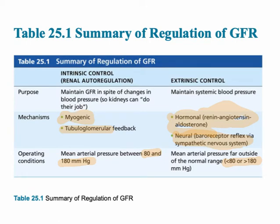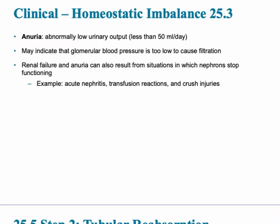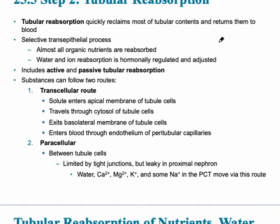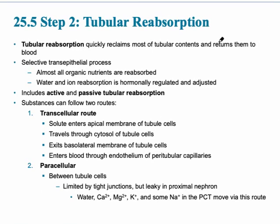A homeostatic imbalance called anuria is the abnormally low urinary output, which usually reflects a problem with the kidney. Tubular reabsorption is the reclamation of tubular contents that return to the blood — whatever is in the renal tubule is reabsorbed into the peritubular capillaries, involving both active and passive processes.